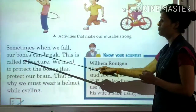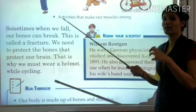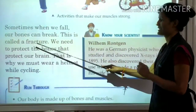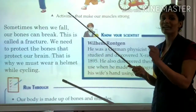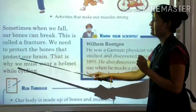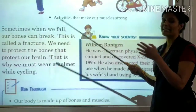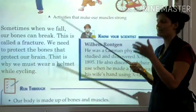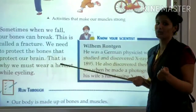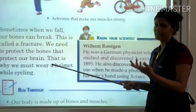Sometimes when we fall, our bones can break. This is called a fracture — when a bone breaks, that condition is known as a fracture. We need to protect the bones that protect our brain, because the brain controls all body functions. That is why we must wear a helmet while cycling or riding a scooter.